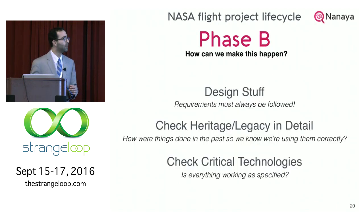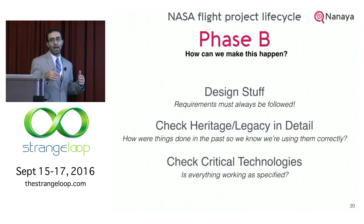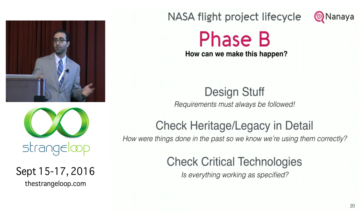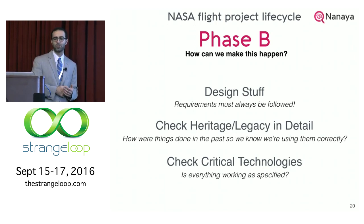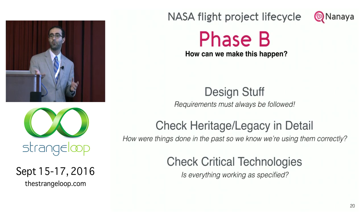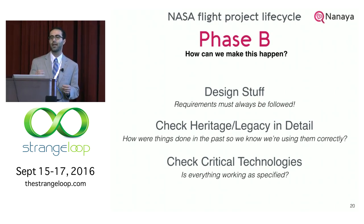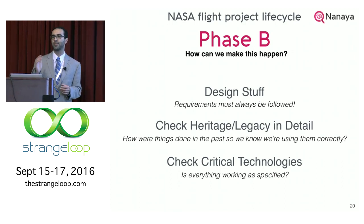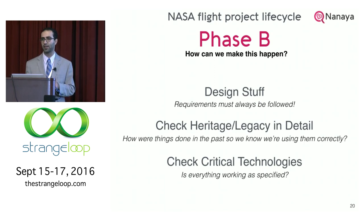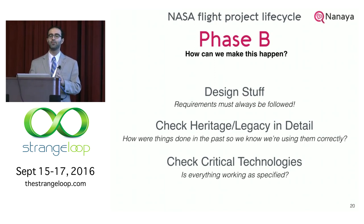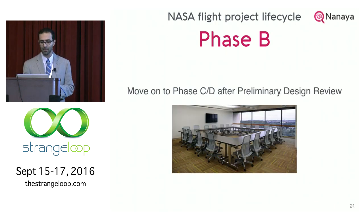After reviews and approval, you continue into phase B — can we actually make this happen? We start designing things, check for heritage like the radio in this example, and check for critical technologies. For instance, the nephilometer from the French is a new instrument using new technology. We have to make sure all technology is mature, tested, and ready in a laboratory and flight-like setting before we even consider putting it on the mission. If it's not, we cut it. One of the biggest reviews is the preliminary design review, which happens before you start cutting things in the shop or writing code, and could be a week-long ordeal.